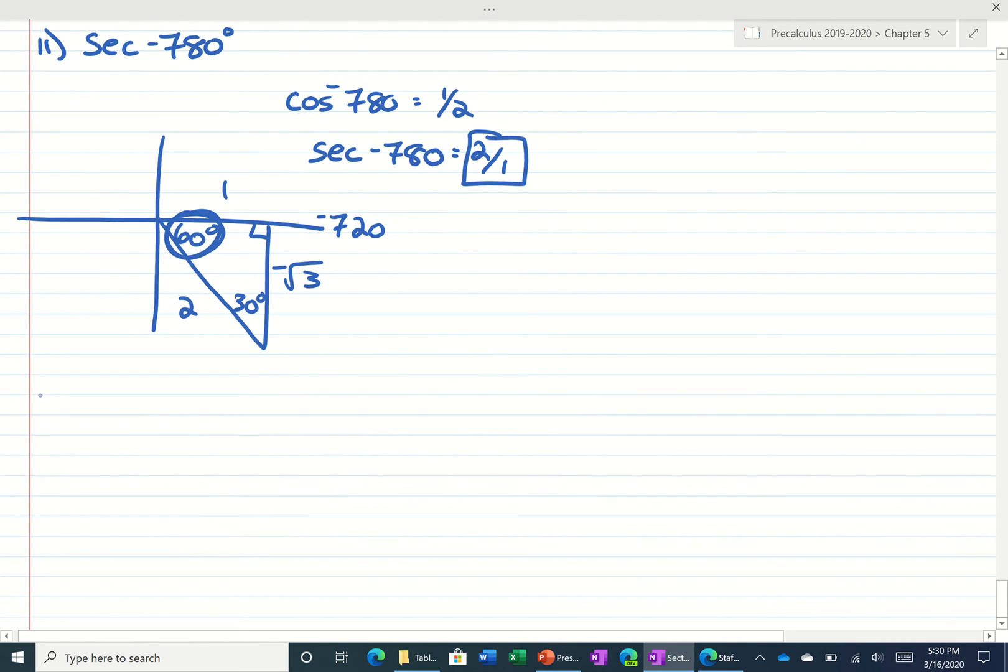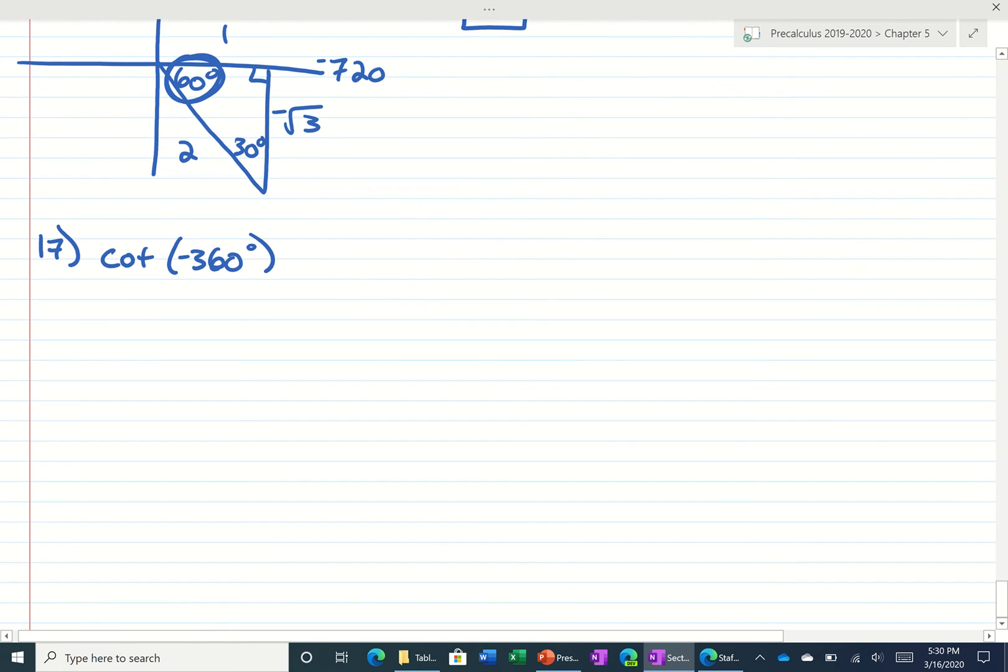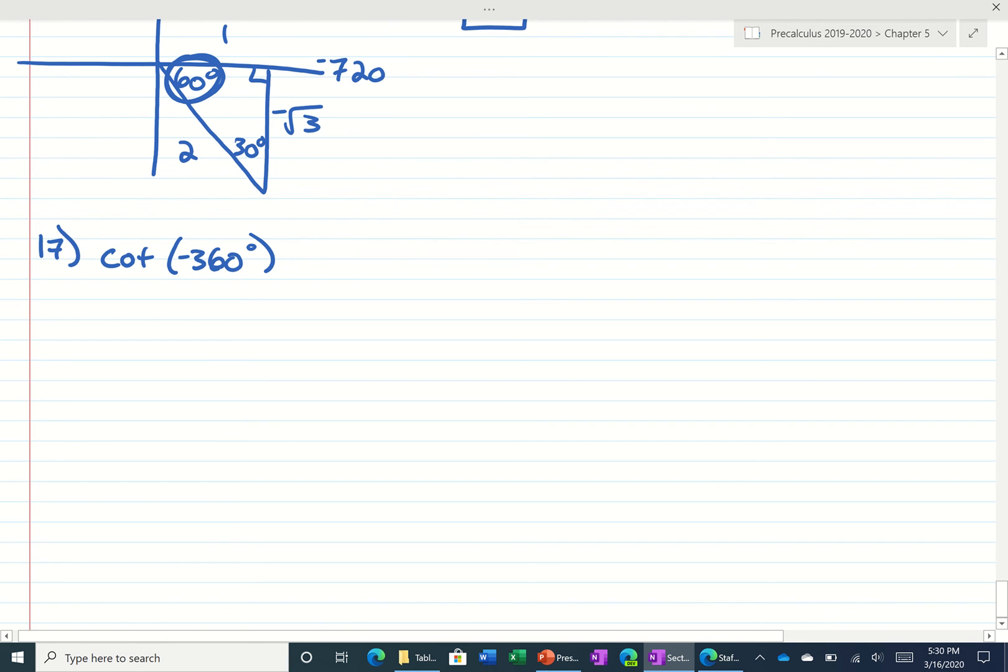Keep going down here. I see number 17. It says the cotangent of negative 360 degrees. This is the most important thing in trigonometry, so if you guys understand this, that's great. If you don't, I want to make sure that you do.